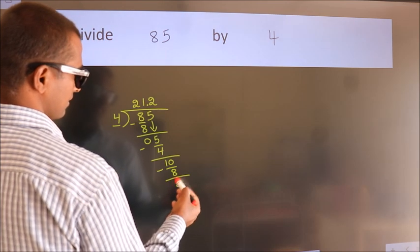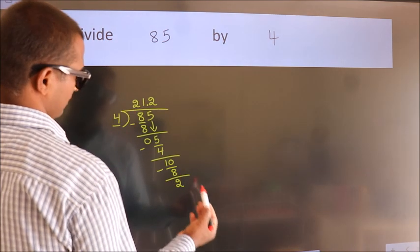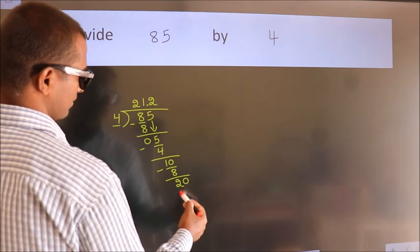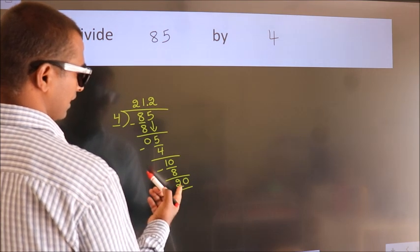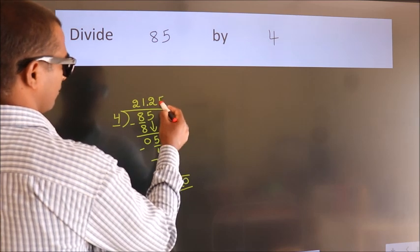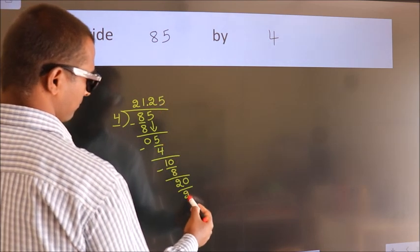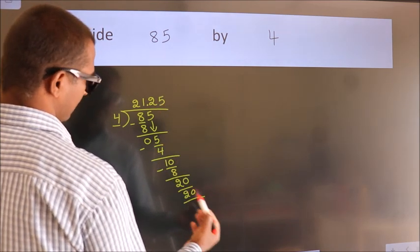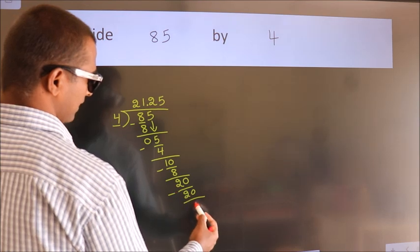After this, we already have the decimal, so directly take 0, making it 20. When do we get 20 in the 4 table? 4 times 5 is 20. Now we subtract and get 0.